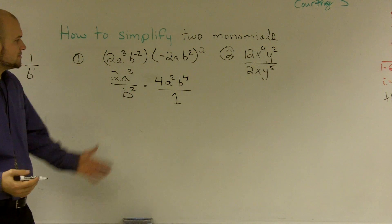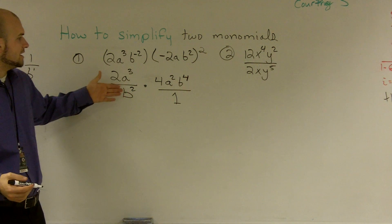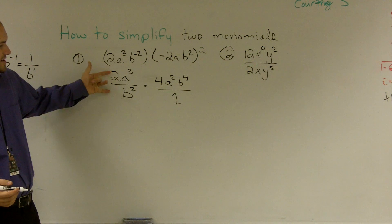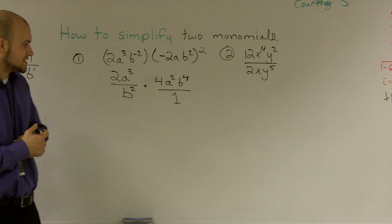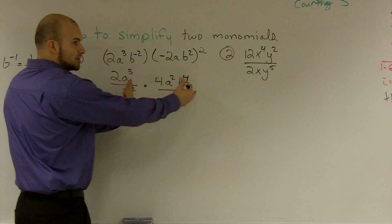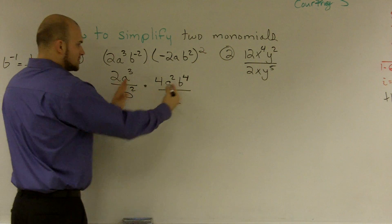Now, I'm going to put that over 1. The reason why is because I have a rational monomial over here, so I want to make this rational as well, or pretty much make it as a fraction. So now, I can just multiply across. These are two fractions. You just multiply across.